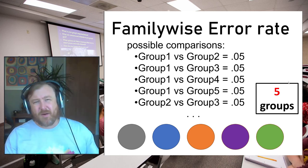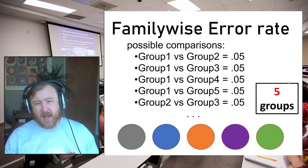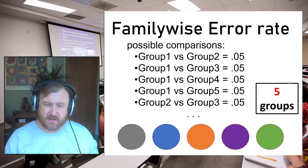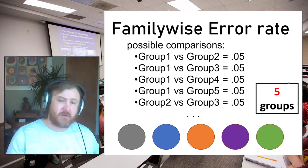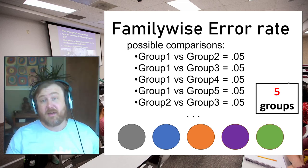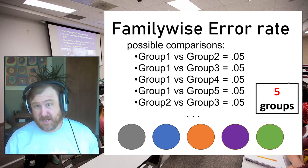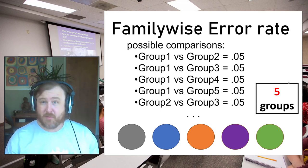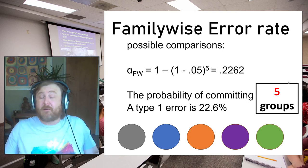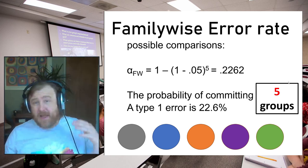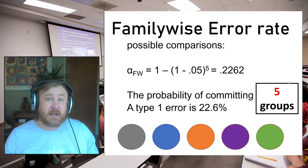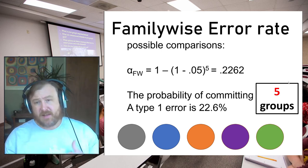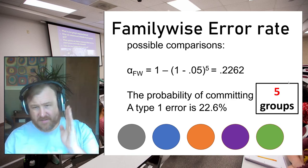We want to keep our family-wise error rate at five percent. Consider what would happen with five groups — how many t-tests would you have to conduct to assess every group comparison? You'd need group one vs. two, one vs. three, one vs. four, one vs. five, two vs. three, and on and on. That would be quite tedious, and with five groups the family-wise error rate would increase to a 23% chance of committing a type one error. ANOVA controls for this and keeps our family-wise error rate at our desired level of 0.05.